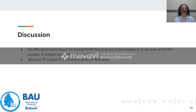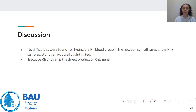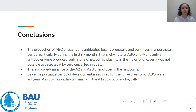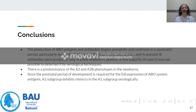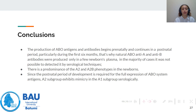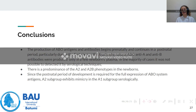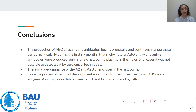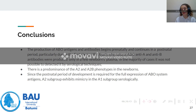In conclusion, the production of ABO antigens and antibodies begins prenatally and continues in the postnatal period, particularly within the first six months of infant life. This is why natural ABO anti-A and anti-B antibodies were detected only in a minority of newborns' plasma in our study, and in the majority of cases it was not possible to detect them by serological techniques. There was a predominance of the A2 and A2B phenotypes in these newborns, and since the postnatal period is required for full ABO antigen expression, the A2 subgroup exhibits mimicry of the A1 subgroup serologically.